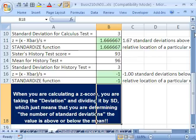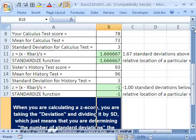So from now on, when you're talking with your sister or your classmates, you're bragging. You're not like saying, I got a 78. You're like, I got 1.67 standard deviations above the mean. And then, of course, your sister's going to slump her shoulders and say, I got minus 1 standard deviations below the mean.